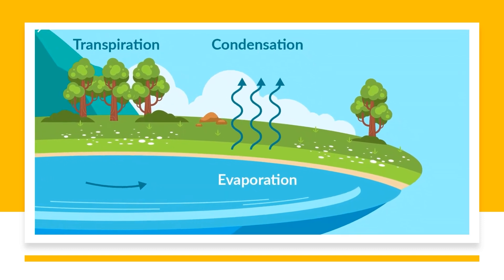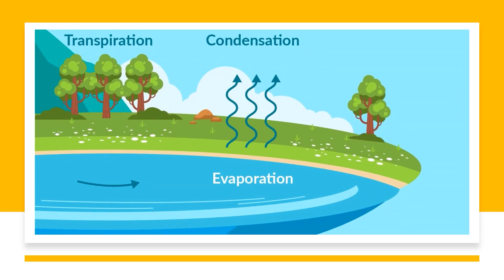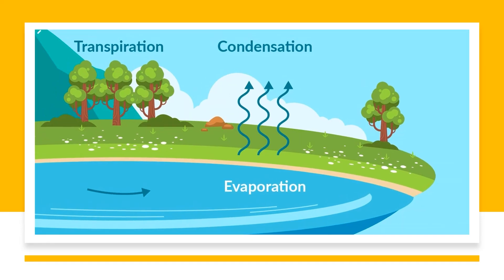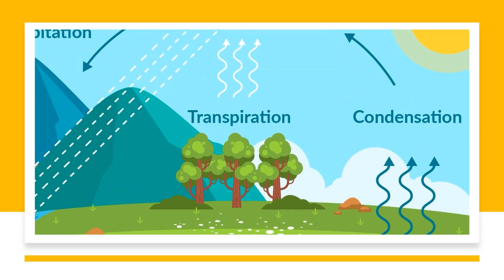Now let's take a closer look at the primary processes that drive the water cycle: evaporation and transpiration. Evaporation is the process by which water changes from a liquid to a gas or vapor, typically due to exposure to sunlight and warm temperatures. Transpiration is the process by which water is released from plants through tiny pores in their leaves. Together, these processes contribute to the overall movement of water throughout the water cycle.